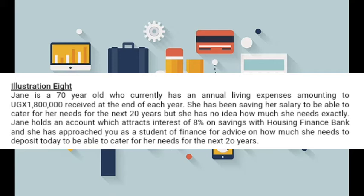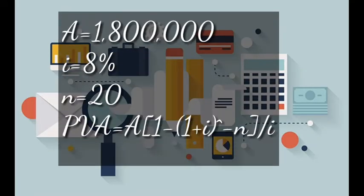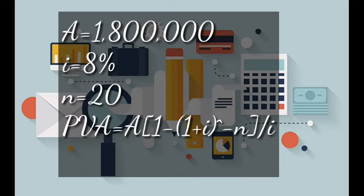The interest rate is 8 percent with Housing Finance Bank. She has approached you as a student of finance to advise her on how much she needs to deposit today — that is the present value — so that she can cater for her needs for the next 20 years. Since we have been given the annuity, we are going to calculate the present value of annuity.